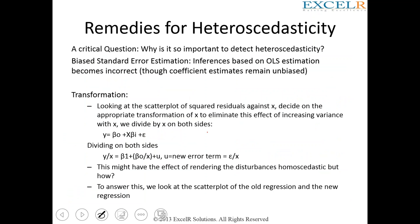How do we get rid of heteroscedasticity, and why is it important? The standard error that gets calculated gives you a wrong indication — it may show low error, making you think the model is good, but that is a false sense of accuracy. Your coefficients or estimated parameters might show incorrect values, leading you to assume your model is good when it is not. Inferences based on OLS become incorrect when heteroscedasticity is present.